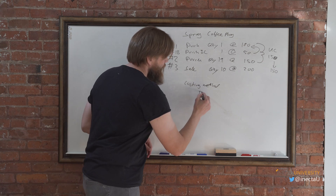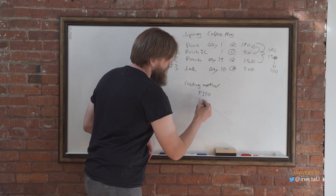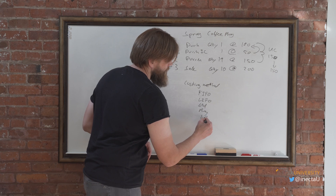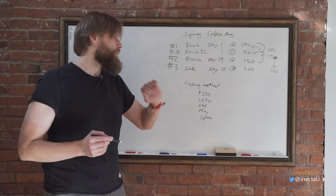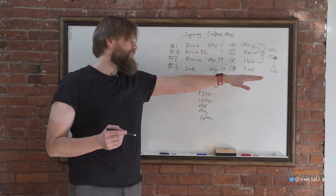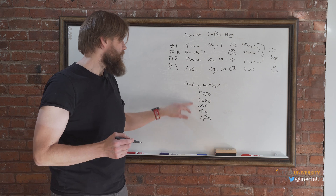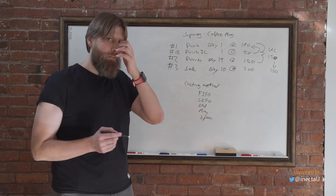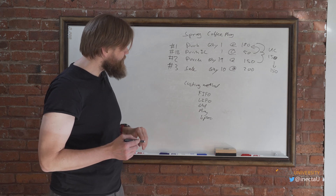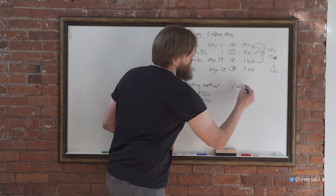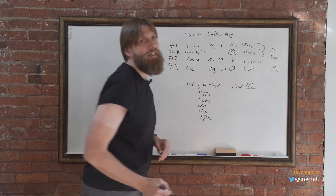The first reason is the costing method. We have options: FIFO, LIFO, standard, average, and specific. They all work differently and could affect this, although in this case you can run through almost all of these — except maybe specific and standard — and get similar results.